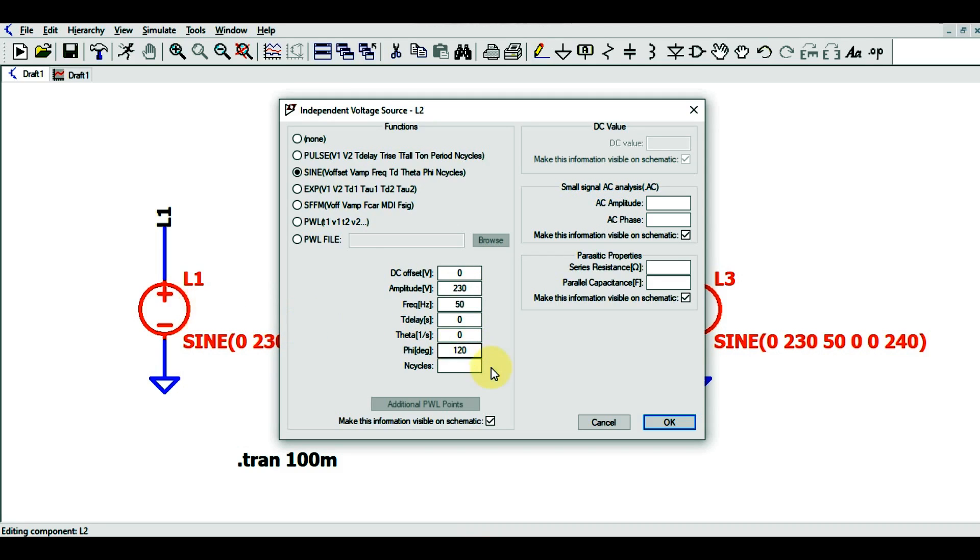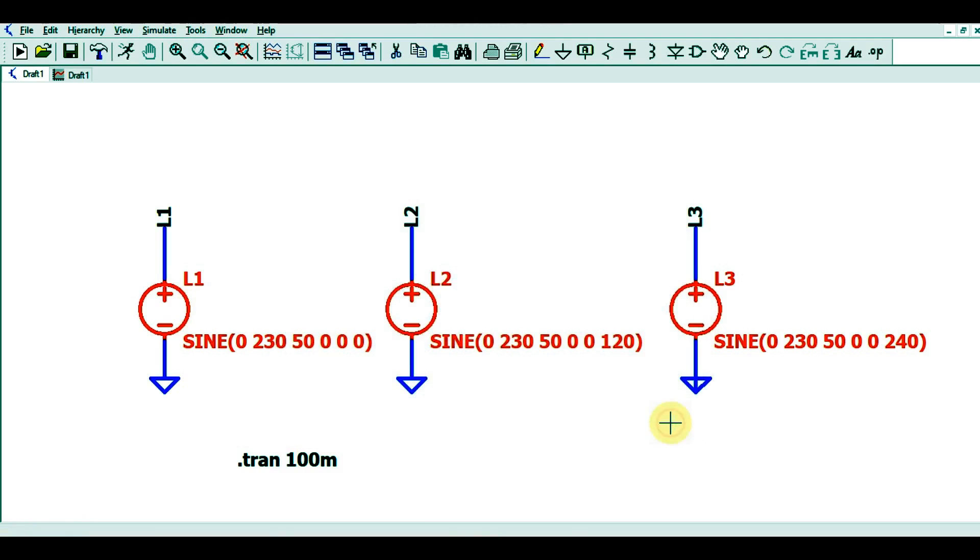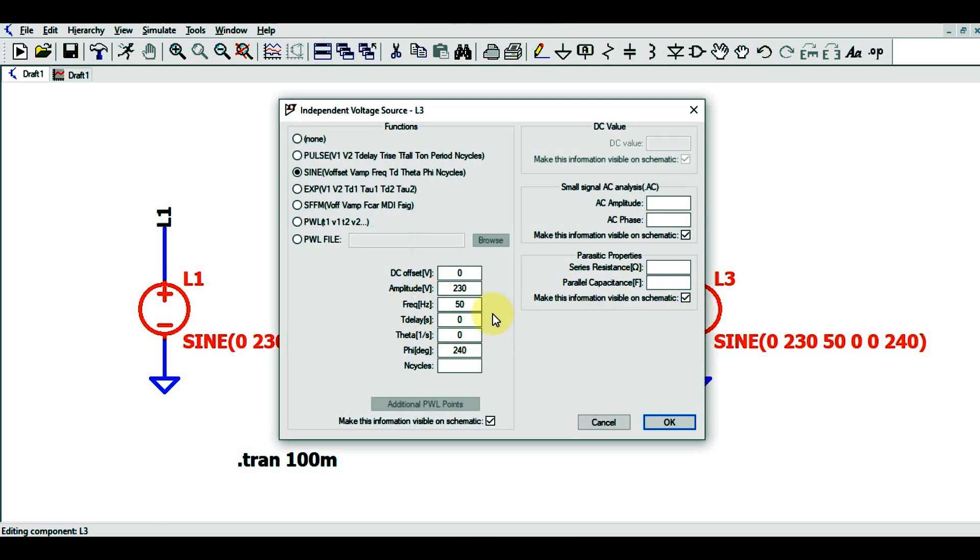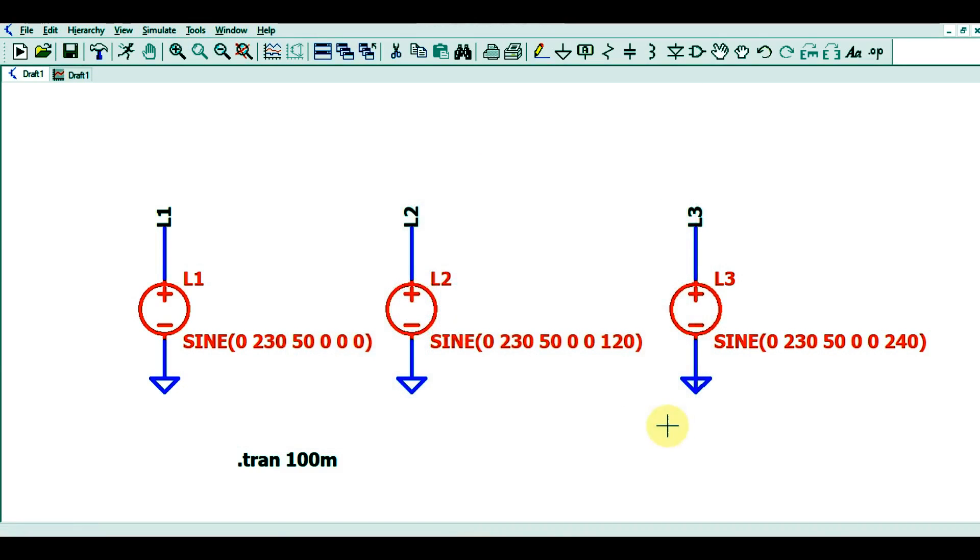phase difference between L1 and L2 is 120 degrees. Now, if you right-click on L3, you can see its parameters. All parameters are the same except the phase angle, which is 240 degrees. That is how you define your phases L1, L2, and